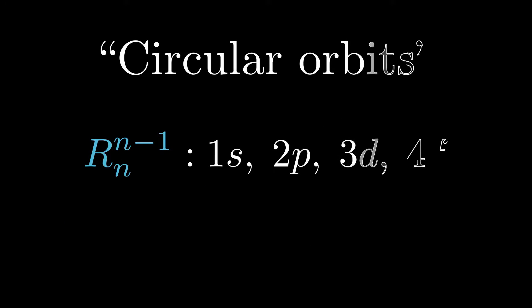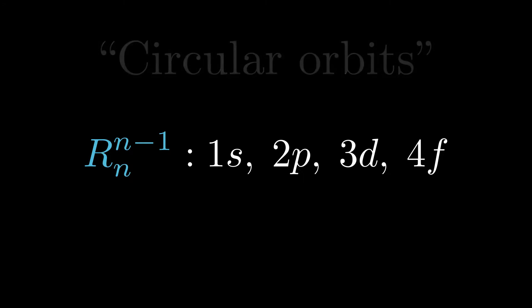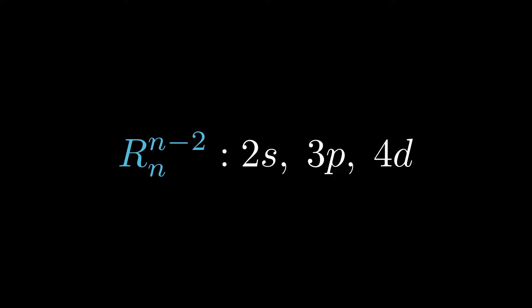In the previous video, we called the state with l equals to n minus 1 the circular orbits as these states have maximum amount of orbital angular momentum for a given energy. We now wish to find the radial wave functions of l equals to n minus 2. For the chemists among you, these are 2s, 3p and 4d orbitals.